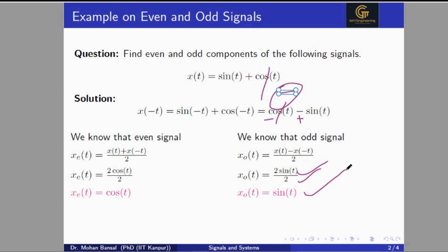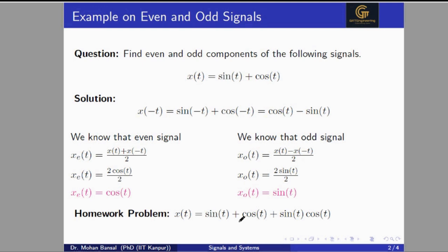This is the way by which we can identify the even and odd components of any signal. There is also a homework problem you can try at home — we have already checked that sin(t) is the odd component and cos(t) is the even component. You can verify by substituting t equal to minus t, then add x(t) plus x(minus t) and divide by 2 for even components, and subtract x(minus t) from x(t) and divide by 2 for odd components.